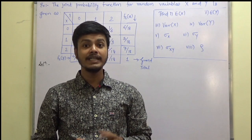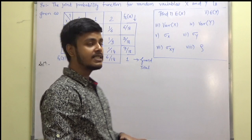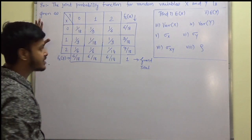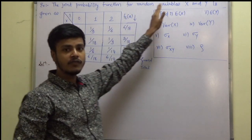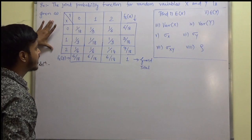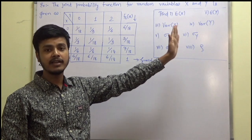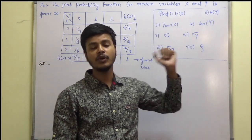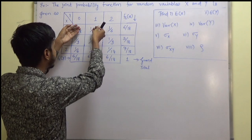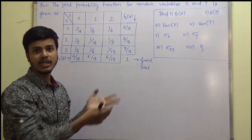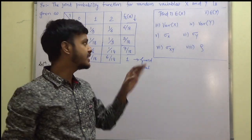Let us take a problem on discrete random variable, and in the next learning video we will take an example on continuous random variable. This problem involves a discrete random variable where x and y take values 0, 1, 2. The joint probability function of random variables x and y is given in a table, and we have to find expectation of x, expectation of y, variance of x and y, standard deviation, covariance, and coefficient of correlation. Sometimes the table is given directly; otherwise the joint probability function is given and you have to construct the joint probability table.